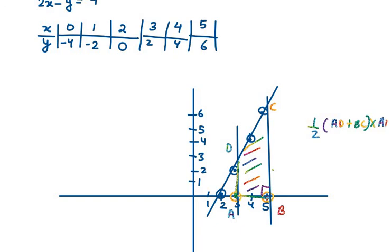It will be AB here. Now, AD is till point 2. Then, we have BC as 6. 2 plus 6 into AB. The difference between 3 and 5 is 2. So, height is 2.